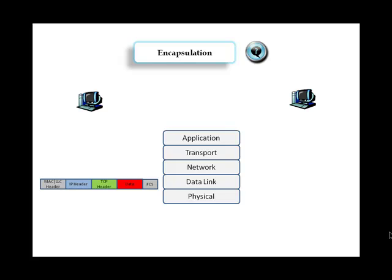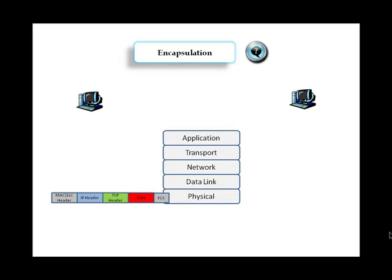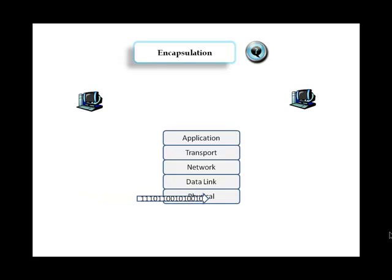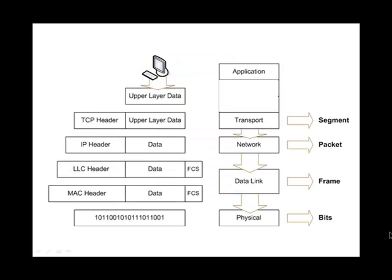The packet is further sent down to the data link layer, where the MAC address and LLC are added, forming what is referred to as a frame. An error detection code is also added. The frame is then sent out to the medium, where it is converted into ones and zeros and transmitted across the network.